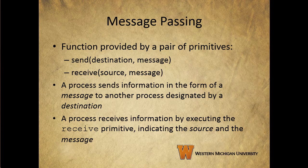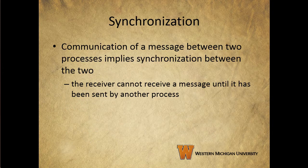This is the minimum set of operations needed for processes to engage in message passing. A process sends information in the form of a message to another process designated by the destination, and a process receives information by executing the receive primitive, indicating the source and the message. The communication of a message between two processes implies synchronization between the two, simply because a receiver can't receive a message unless it's actually been sent by another process.